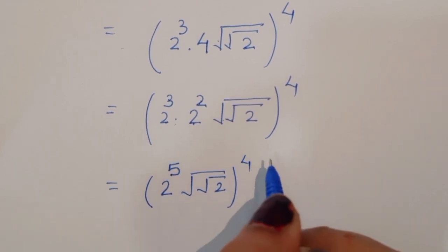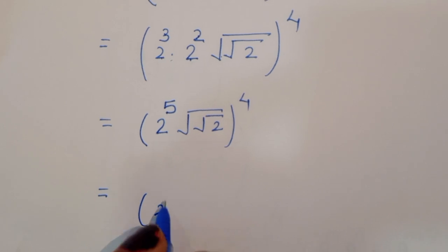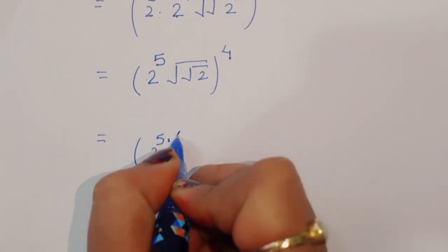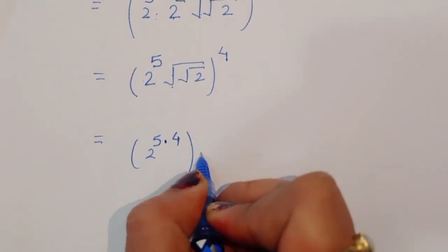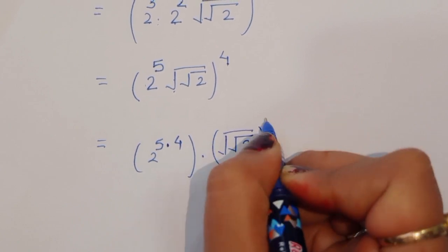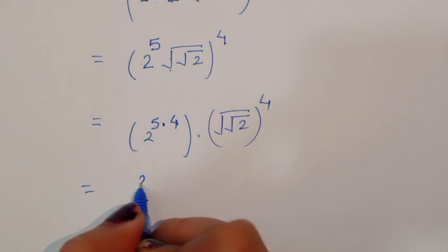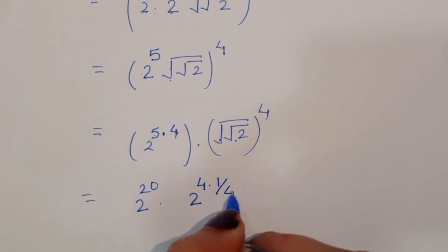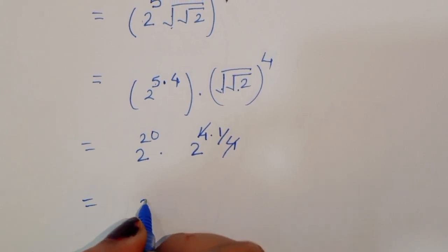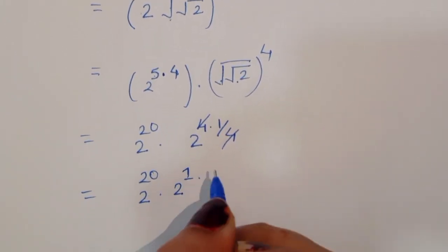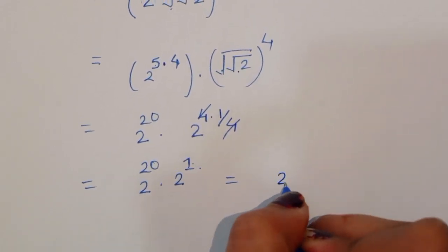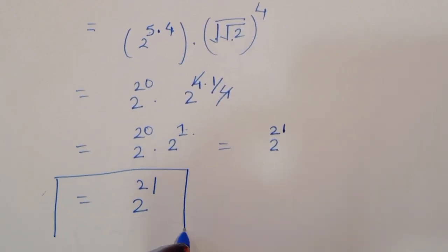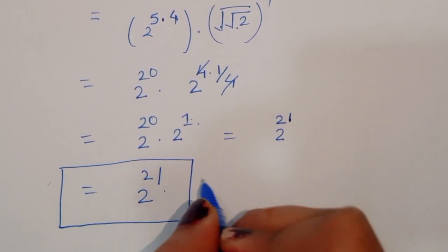So we have 2 power 5, raised to power 4, times square root of 2. That gives 2 power 5 times 4 equals 2 power 20, times square root of 2, which is 2 power 1 by 4 — wait, square root of 2 means 2 power 1 by 2. So we get 2 power 20 times 2 power 1, which equals 2 power 21. Both methods give the same answer: 2 power 21.